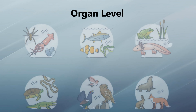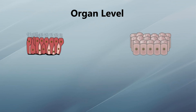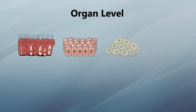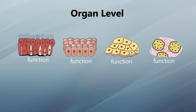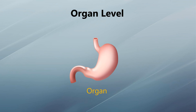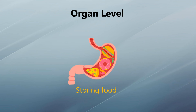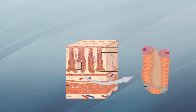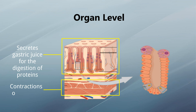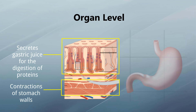At the organ level, in higher multicellular organisms, more than one type of tissue having related functions are organized together to make a unit called an organ. Different tissues of an organ perform their specific functions, and these functions collectively become the function of that organ. For example, the stomach is an organ specialized for the digestion of proteins and storing food. Glandular epithelial tissue secretes gastric juice for the digestion of proteins, while muscular tissue performs contractions of the stomach walls for grinding and moving food — two tissues performing specific functions that collectively become the function of the stomach.